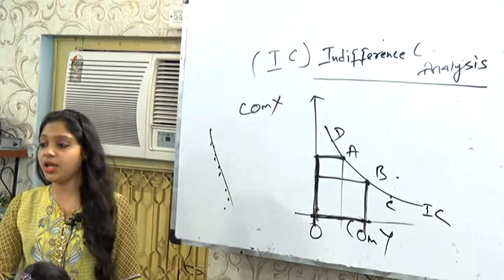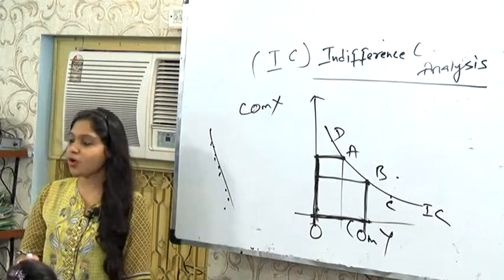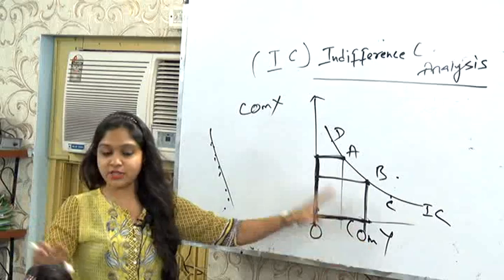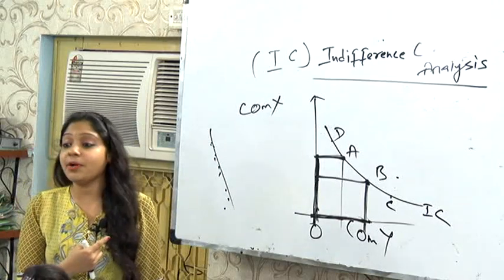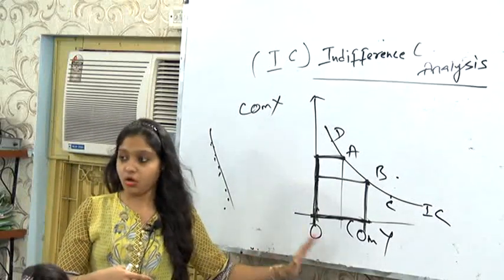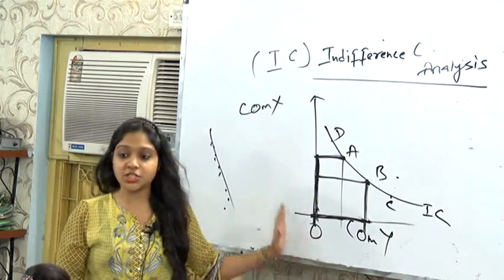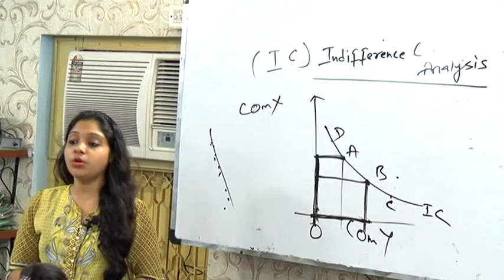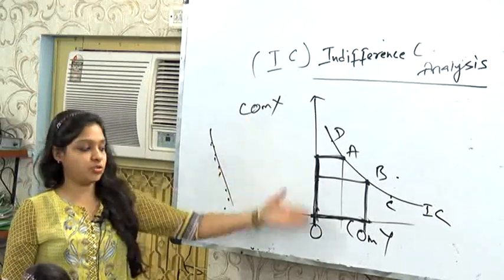Any point on the same indifference curve gives the same level of satisfaction, but they consist of different units of X and Y. As you move from bundle A to B to C, you are increasing Y and decreasing X. So if you want to consume more of Y, you need to forego some X; and if you want to consume more of X, you need to forego some Y. The two commodities have an inverse relationship.